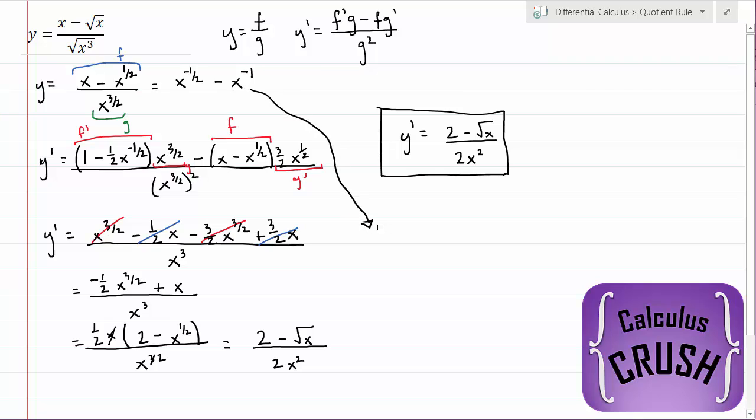So let's move over here. So y prime equals negative 1 half x to the minus 3 halves plus x to the minus 2. Let's factor out the smallest common factor, which would be x to the minus 2 and a 1 half. And what we have left over with is on this side, we have a 2 and then a minus x to the 1 half.